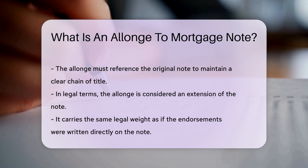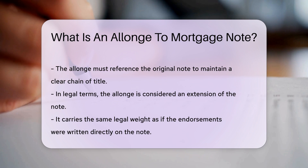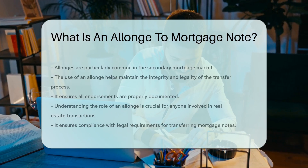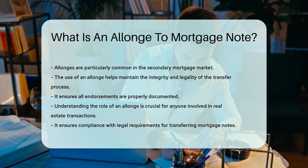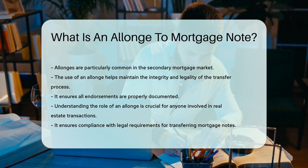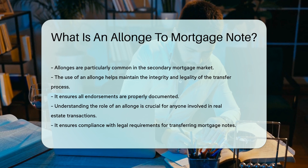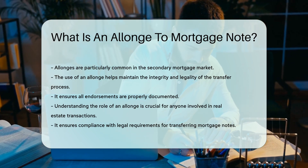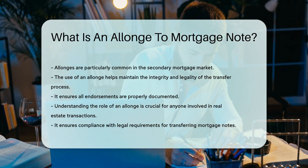Allonges are particularly common in the secondary mortgage market, where mortgage notes are frequently bought and sold. The use of an allonge helps maintain the integrity and legality of the transfer process, ensuring all endorsements are properly documented. Understanding the role of an allonge is crucial for anyone involved in real estate transactions, as it ensures compliance with legal requirements for transferring mortgage notes.